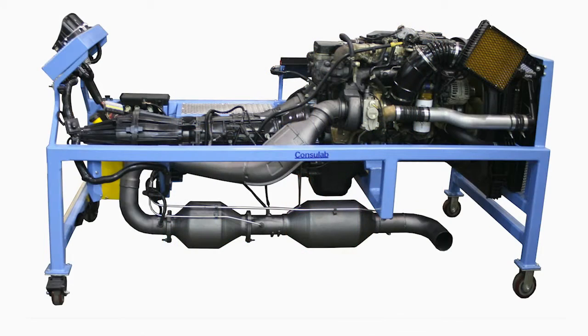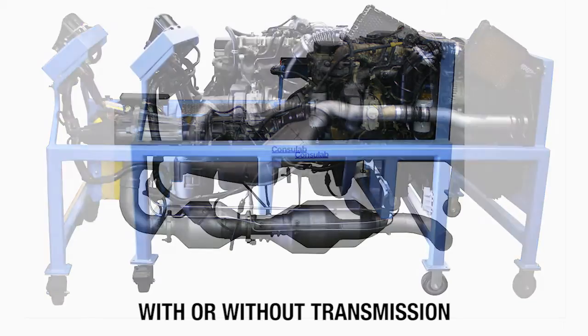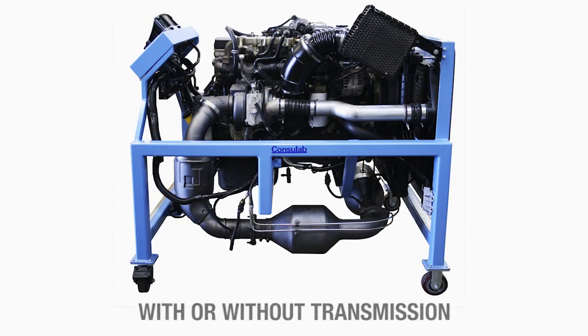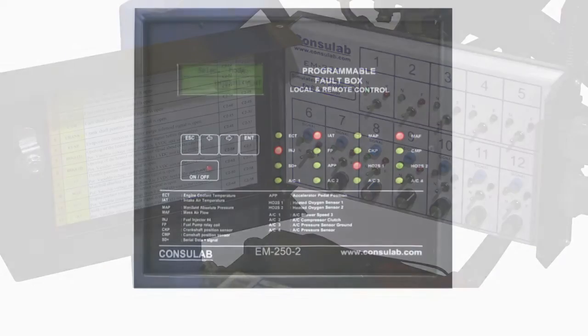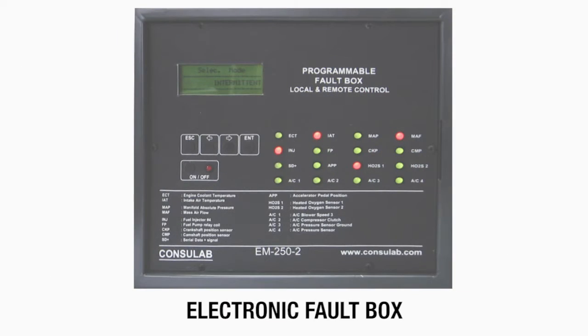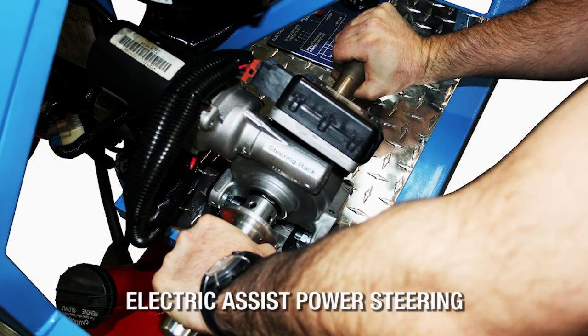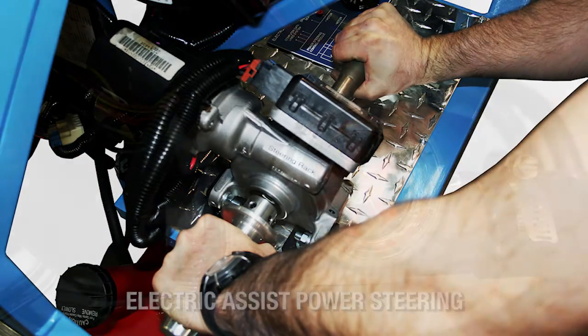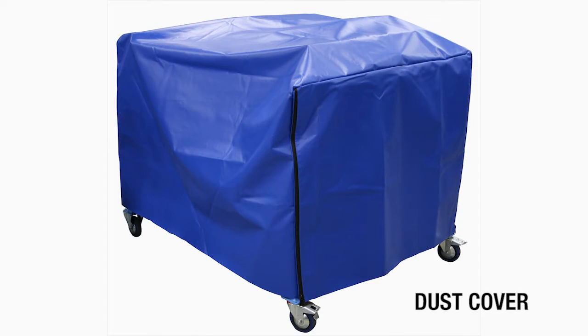Now let's talk about options. When we build an engine bench, you can choose to have it with or without the transmission, with standard or electronic programmable fault box, with the complete air conditioning system, with transparent tubes where your students can see the refrigerant moving through the system. How about electric assist power steering, a coolant flow sight glass, and vinyl dust cover.